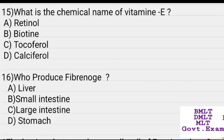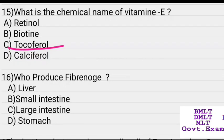What is the chemical name of Vitamin E? Options: retinol, biotin, tocopherol, calciferol. Answer: Tocopherol. Which organ produces fibrinogen? Options: liver, small intestine, large intestine, stomach. Answer: Liver.